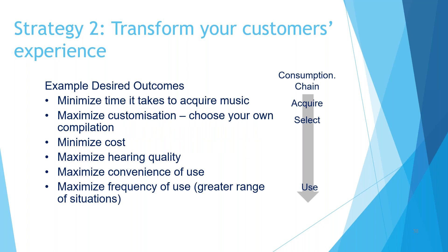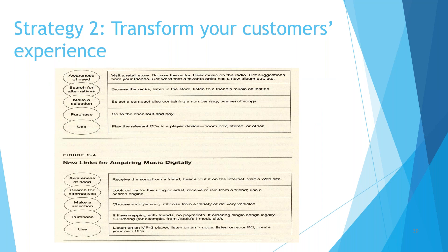In terms of the consumption chain for music, the basic process is to acquire music, select music, and use it. The outcomes you might seek to achieve in that process are minimising the time to find it, maximising customisation — as those who have bought a CD know, you get what you're given, whereas now you choose track by track — minimising the cost, maximising the hearing quality, maximising convenience of use, and maximising frequency of use. To derive these desired outcomes, you should talk to your customers. What you think doesn't really matter — what matters is the opinions of the people who are going to give you money for your product or service.